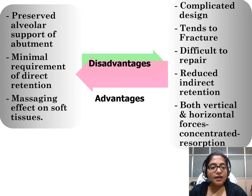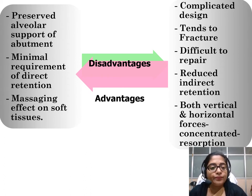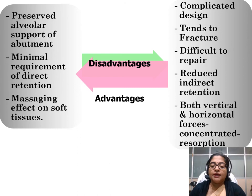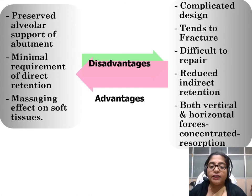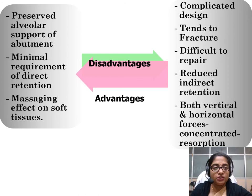The advantages of stress equalization are that it preserves alveolar support of the abutment, avoids unnecessary torquing forces on abutments, has minimal requirement for direct retention, and has a massaging effect on soft tissues. However, the disadvantages include a complicated design, tendency for fracture, difficulty in repair, reduced indirect retention, and that both vertical and horizontal forces are transmitted to the residual ridges.